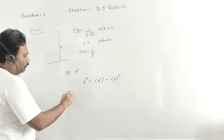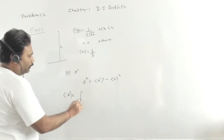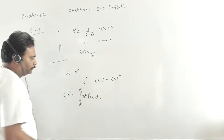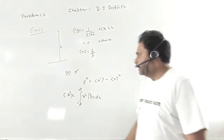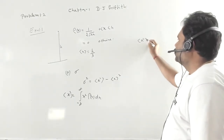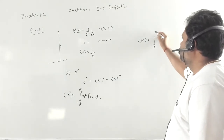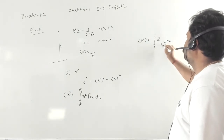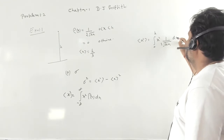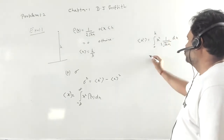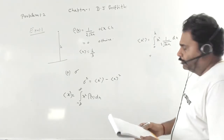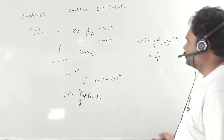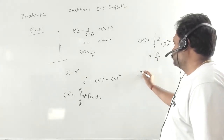The expectation value of x² is the integral from minus infinity to plus infinity of x² ρ(x) dx. Substituting our probability density, this becomes the integral from 0 to h of x² · (1/(2√(hx))) dx. When we evaluate this integration, the value comes out to h²/5.